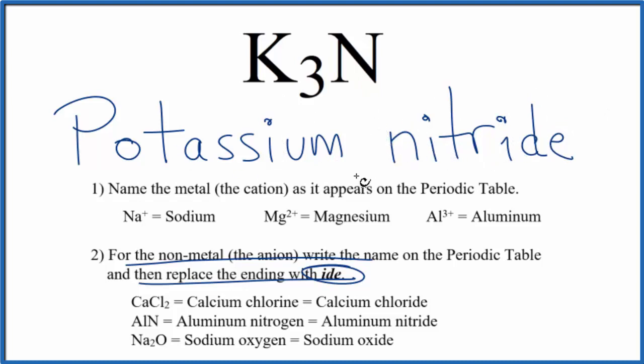If you're given the name and asked to write the formula, potassium has a 1-plus ionic charge, each one of these three potassiums. The nitrogen, when it forms this nitride ion, has a 3-minus ionic charge. So you can see why we need 3 of the 1-plus to balance out the 3-minus.